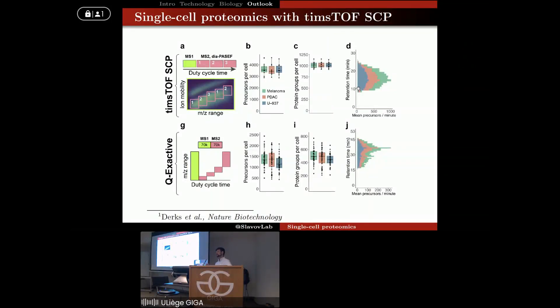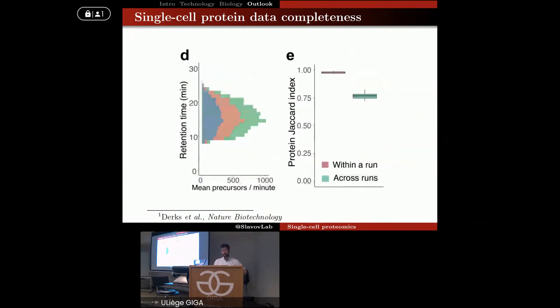But I should also emphasize that this is wonderful that you guys can get timsTOF SCP - it's a very good system. But I should also emphasize that we are delighted by the quantitative data that we get with Q Exactive. While the coverage is lower, the data are highly, highly quantitative. And one particular aspect of the timsTOF instrument that we found to be very strong is that the proteins are consistently identified across all the single cells, especially within a Plex-DIA set as shown here with the Jaccard distance. We have 98% overlap - 98% of proteins are in common quantified across all labeled cells.